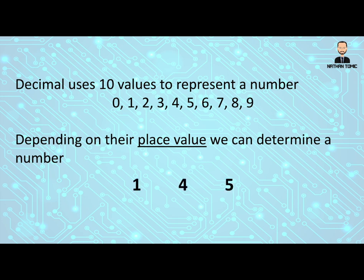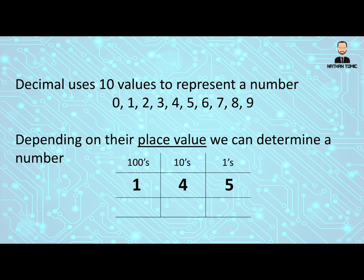So again, for example, if we had this number here, 145, we would know by the place values that we had 5 ones, 4 tens and 1 hundred, which would give us 100 plus 40 plus 5 or that number 145 that we know.